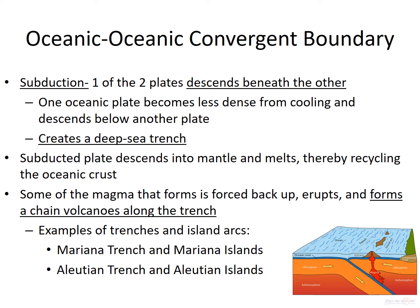This recycles the oceanic crust. Some of the magma that forms from the plate going under is forced back up, erupts, and forms a chain of volcanoes, which as a result start forming islands. Trenches and those islands are called island arcs. The Mariana Trench and Mariana Islands, and the Aleutian Trench and Aleutian Islands, are examples of this.